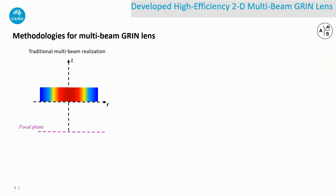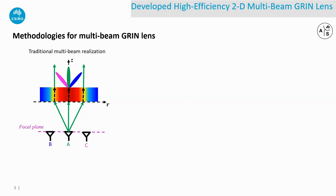To address this problem, we have presented a new methodology for multi-beam GRIN lens. First, let's look at the traditional design method. Basically, the lens profile will be analyzed from a central feed point in order to produce broadside radiation. Then by simply shifting the feed point linearly along the focal plane, oblique radiation beams can be achieved. However, this method can only support small beam coverage.